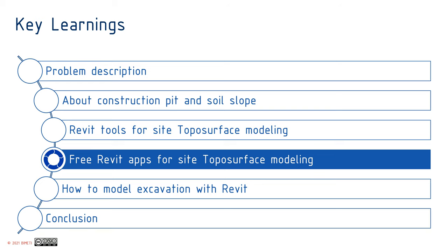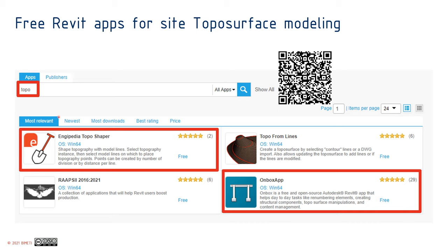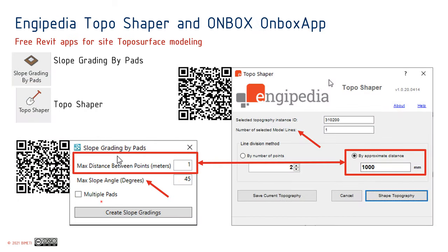There are three Revit apps for site top surface modeling. Go to the Autodesk App Store, search 'Topo', and select three apps to get similar results. In this presentation I will try two of these tools — one is more based on model lines, and the other is based on building pads. They are located in different sections: one tool has its own separate ribbon section, while Top Shaper is inside the Revit add-ins section.